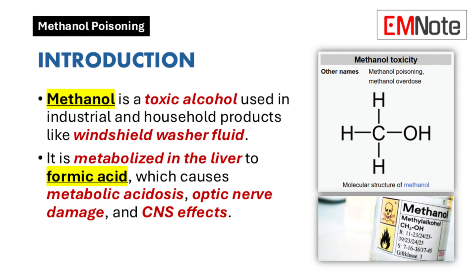The liver metabolizes methanol through oxidation to formaldehyde, followed by conversion to formic acid. This metabolic process results in formic acid accumulation, leading to metabolic acidosis, cellular dysfunction, and specific organ damage, particularly affecting the optic nerve and central nervous system.